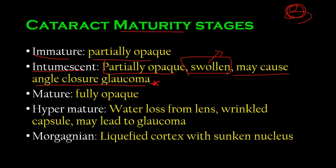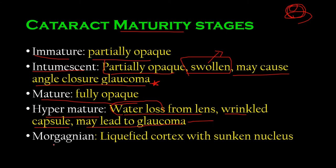The mature type is fully opaque. The hypermature type is also fully opaque but more serious — there is water loss from the lens (not protein loss — this distinction is important). As a result, there is a wrinkled capsule and it may also lead to glaucoma. In morgagnian cataract, the cortex gets liquefied and the nucleus sinks toward the underside.